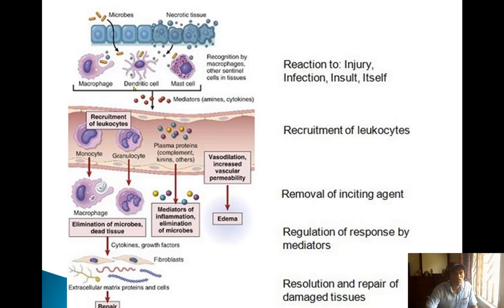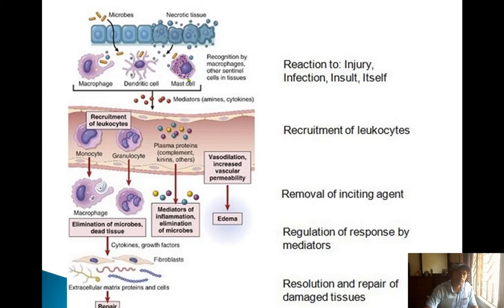Just beneath the skin cells, there are defensive cells — macrophages, dendritic cells, and mast cells. Macrophages and dendritic cells engulf and try to kill bacteria or viruses. Mast cells produce and release histamine.